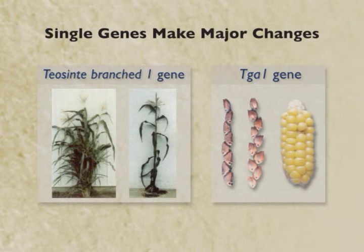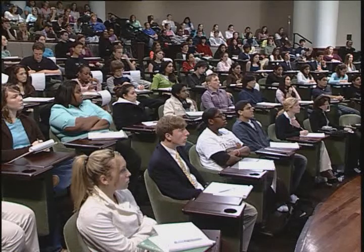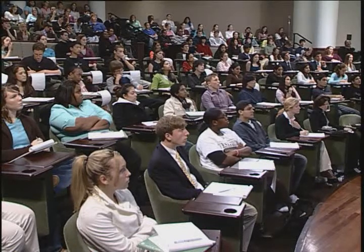For example, mutations in a single gene called teosinte branched 1 can take a single linear-like corn stalk and produce a more bushy plant that looks like teosinte. Conversely, a second gene called TGA1 plays a key role in seed and fruit case morphology. If you introduce the maize version of TGA1 into teosinte, those stony fruit cases begin to open up and soften, you get rid of the stony covering, and you begin to turn the kernels inside out — exactly the way breeders needed to produce exposed kernels on an ear of corn.